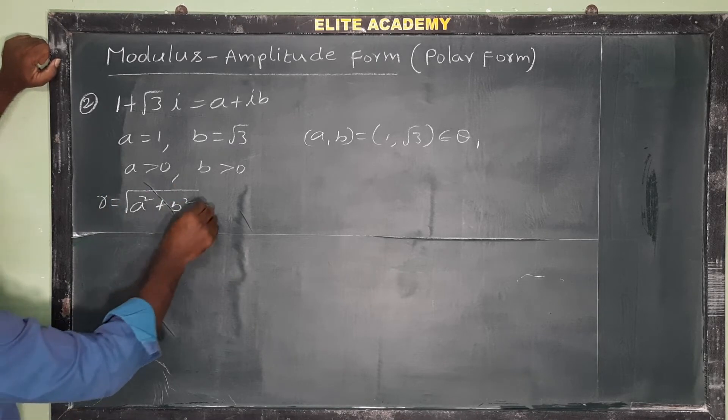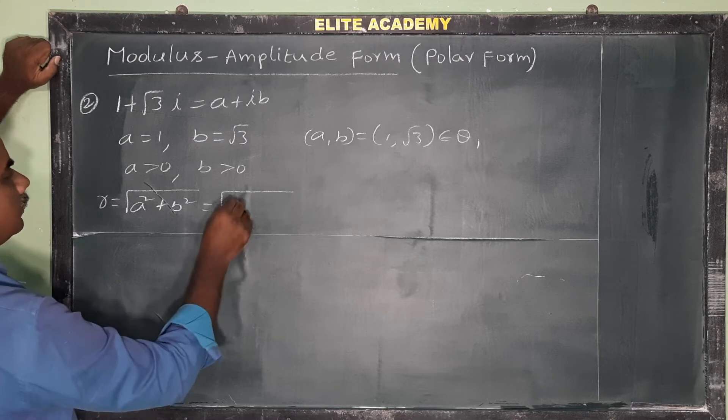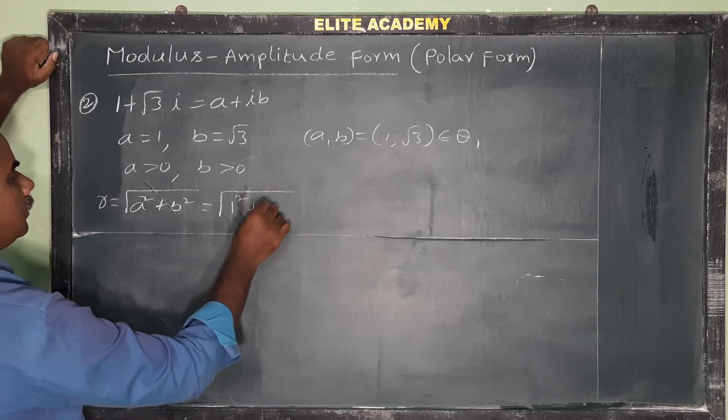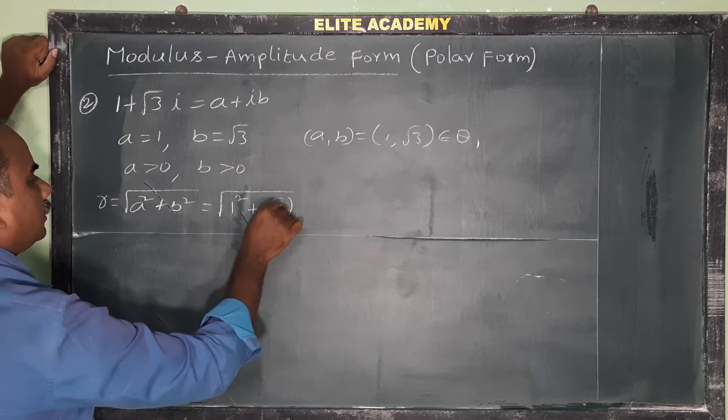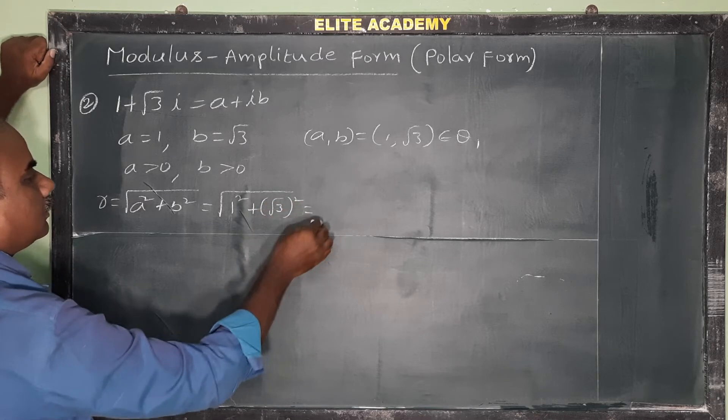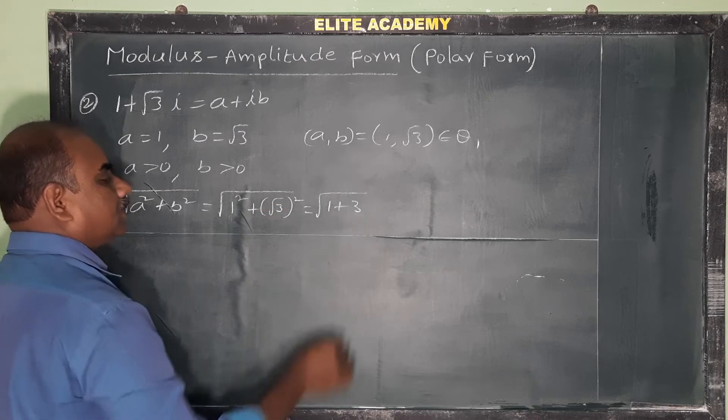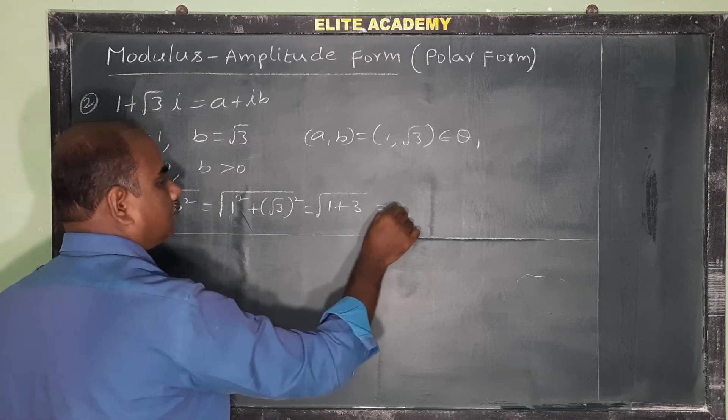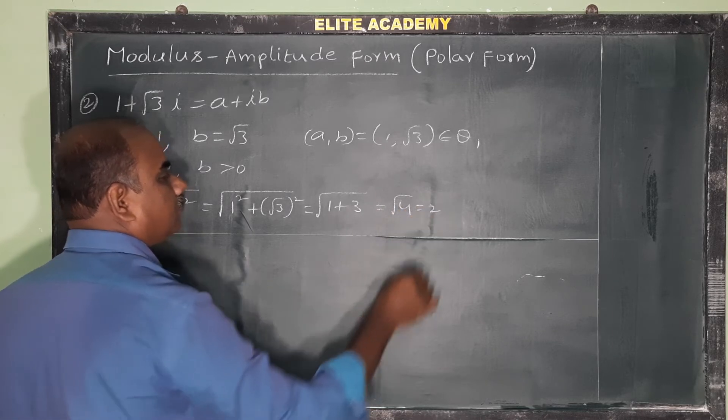That is equal to 1 square plus root 3 whole square, which equals the square root of 1 plus 3, which is the square root of 4. So r equals 2.